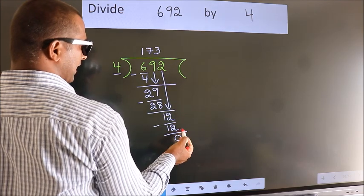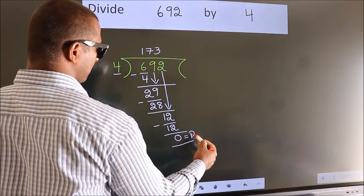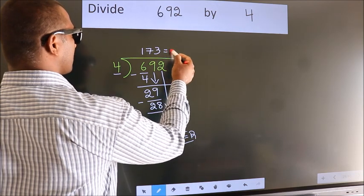No more numbers to bring down. So we stop here. This is our remainder. This is our quotient.